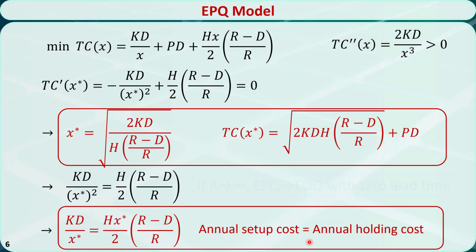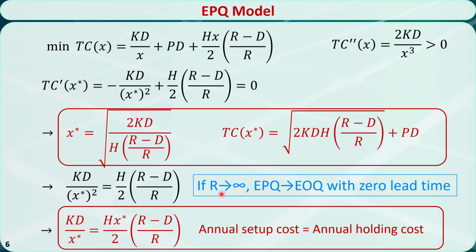If the production rate R is a very large number compared to the demand, this EPQ model is equivalent to an EOQ model with zero lead time, meaning the term (1 - D/R) becomes 1 and the production stage is very short.